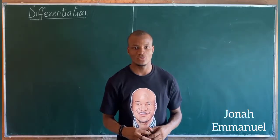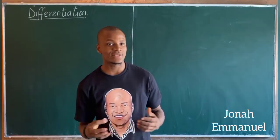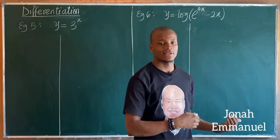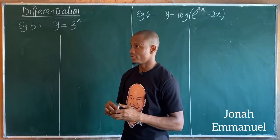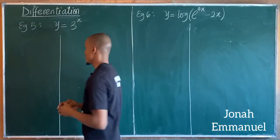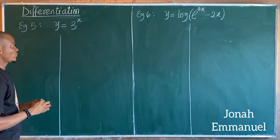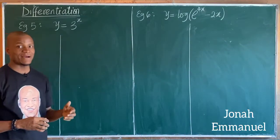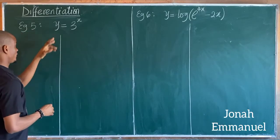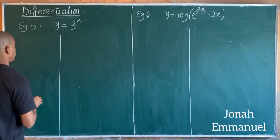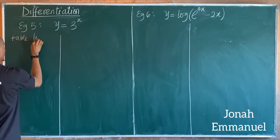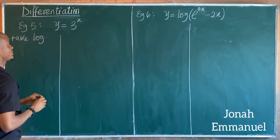Hello and welcome to Excellence Academy. Let's take a fifth and sixth example of differentiation. Here's one — we start with y equal to 3 to the power x, and we're asked to differentiate this. The first thing is to take the log of both sides.